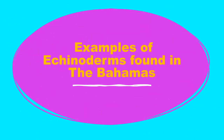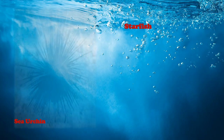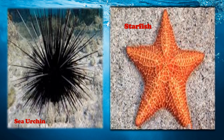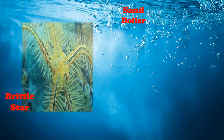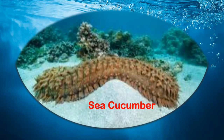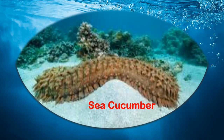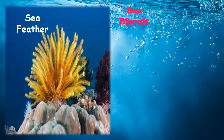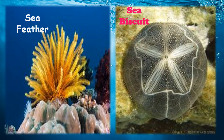Like sponges, enkinoderms are found in waters in the Bahamas. Let's explore some of these examples of enkinoderms: sea urchins, starfish, brittle star, sand dollar, sea cucumber, sea feather, and sea biscuit.